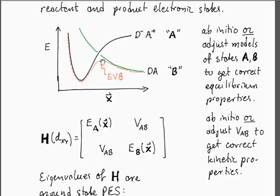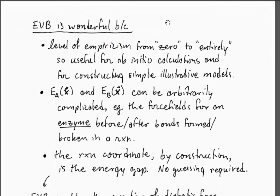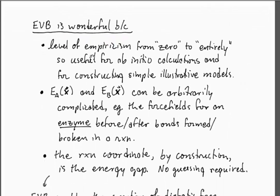Empirical valence bond is really wonderful because the level of empiricism is entirely adjustable. You can go from computing all these terms quantum mechanically, and you can go all the way to the other extreme and you can make an entirely empirical model that's just useful for illustrations and predicting trends.